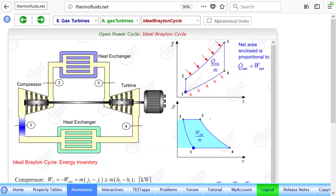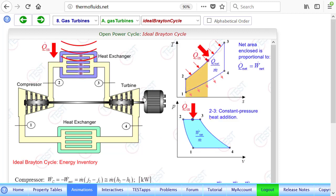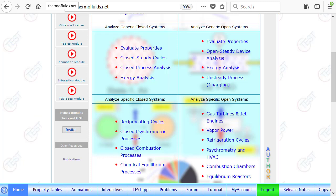This is the ideal Brayton cycle represented in the T-S and P-V diagram. As you can see, it's basically a collection of open steady devices connected back to back. So it's very important that before you study gas turbines, you are very familiar with the open steady analysis of open devices, because each component of a gas turbine is such a device.